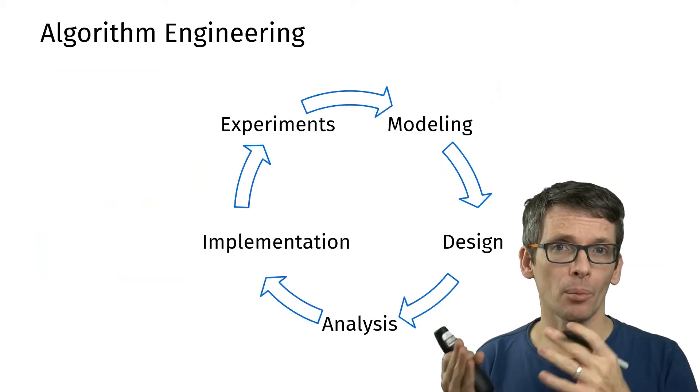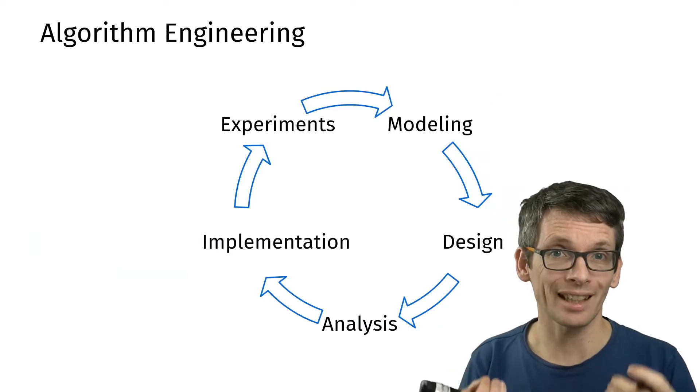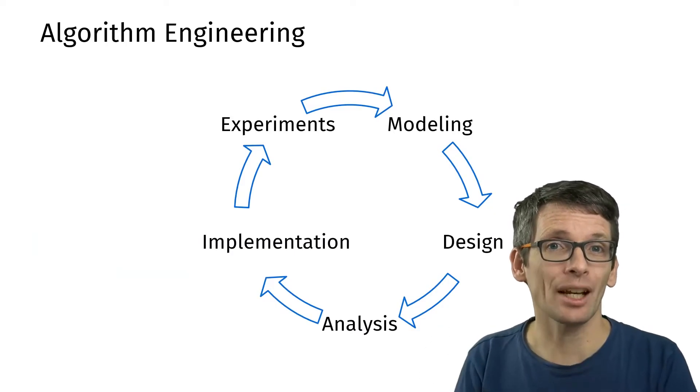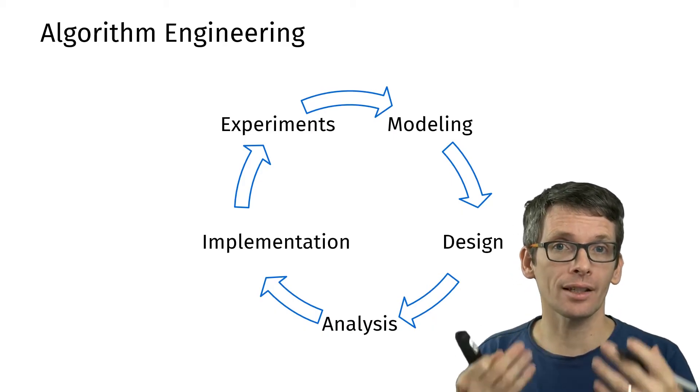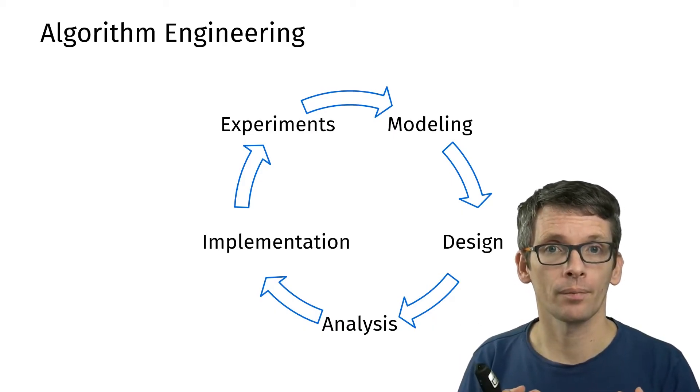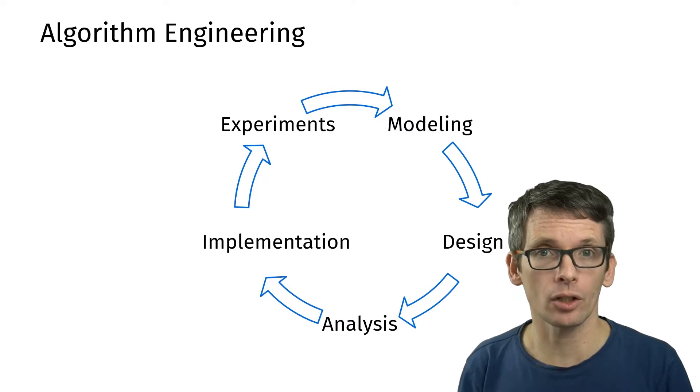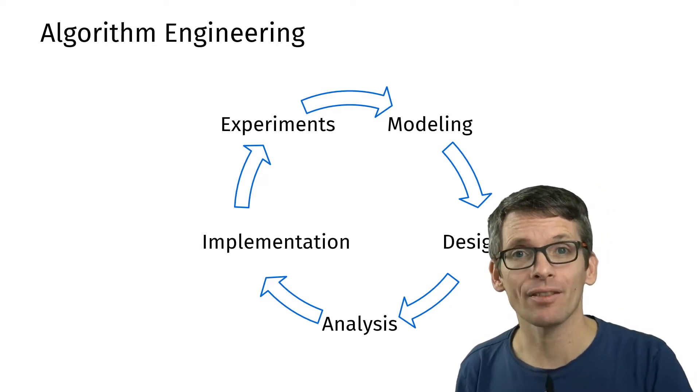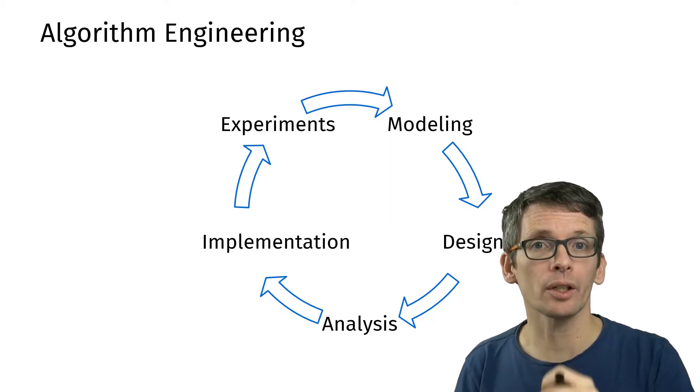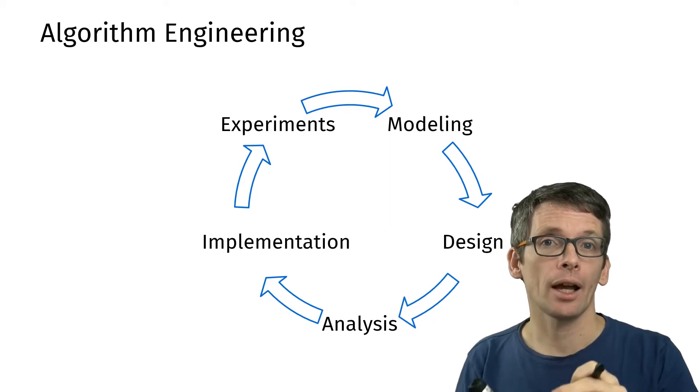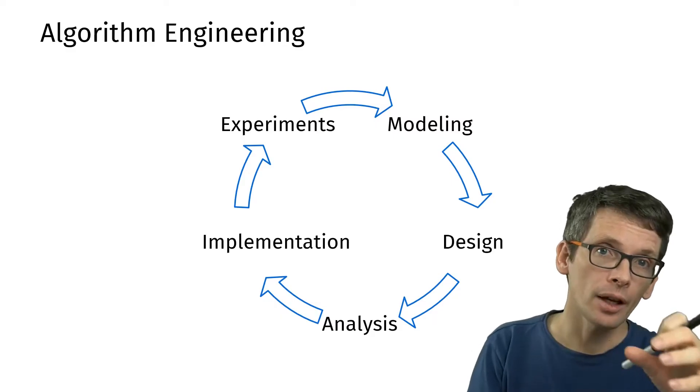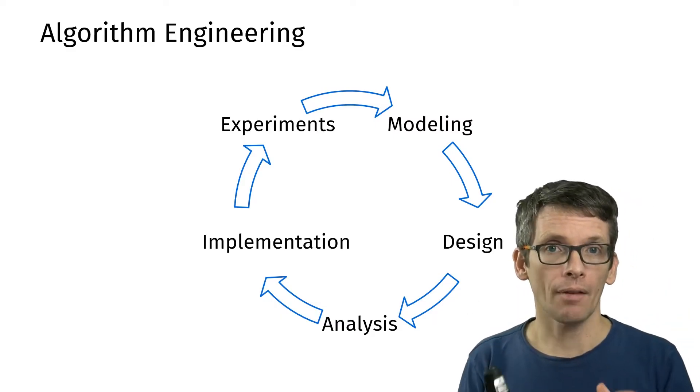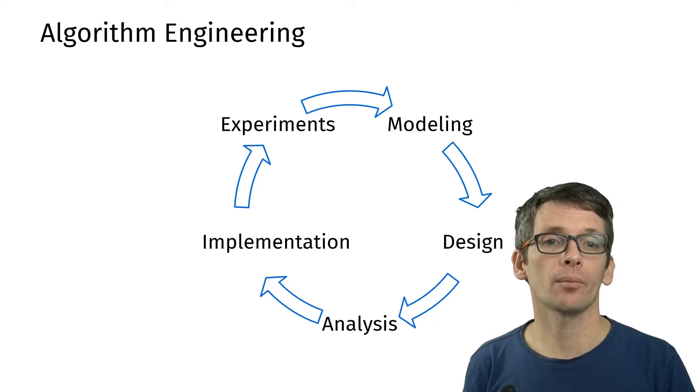If we want to have a practical algorithm it makes perfect sense that we also integrate implementation and experimentation in our design process. That's exactly what this cycle here shows. We still have the modeling, the design, and the theoretical analysis, but we combine it with implementation and experimentation, and then let the experimentation inform again the modeling, and so on. This is what we call algorithm engineering.